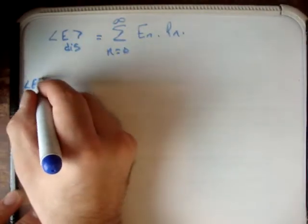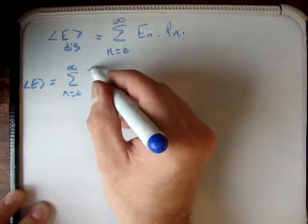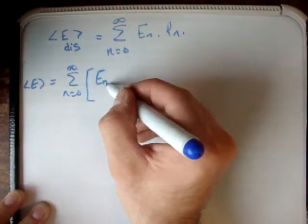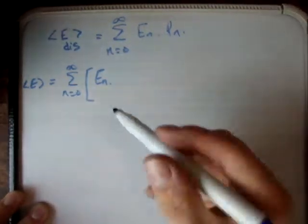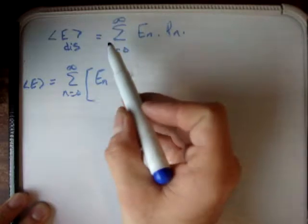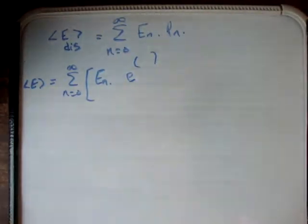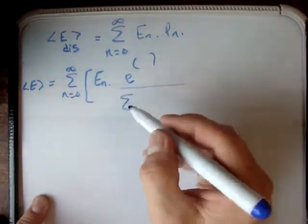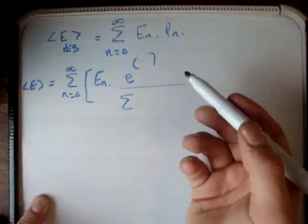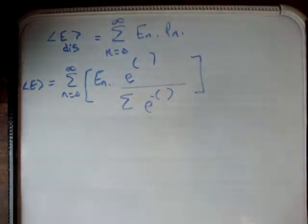The average energy E is equal to the sum from n equals 0 to infinity of E_n — which is of course a constant, since everything must be an integer multiple of E₀ — times e to the negative n·E₀ over kT, all divided by the sum from n equals 0 to infinity of e to the negative n·E₀ over kT. I find writing all those exponentials highly annoying.